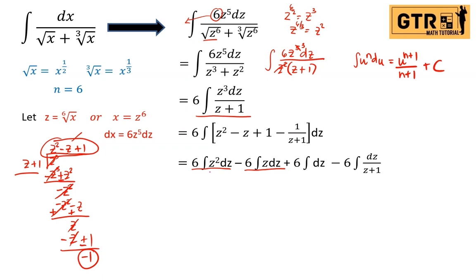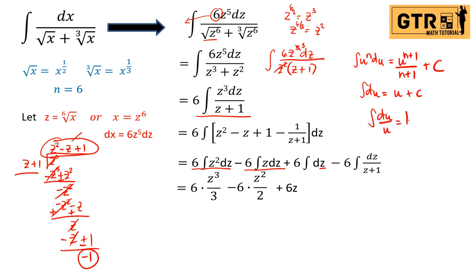Distributing: six z squared dz, minus six z dz, plus six dz, minus six dz over (z plus one). Using the power rule (u to the n du formula), we get six z cubed over three for the first term, minus six z squared over two for the second, plus six z for the third. For the last term, using the integral of du over u equals ln|u|, we get minus six ln|z plus one|.